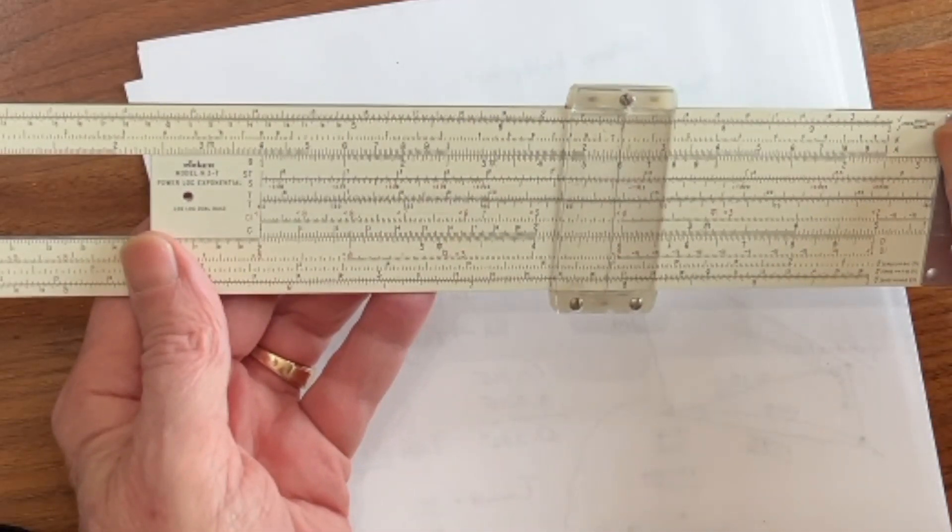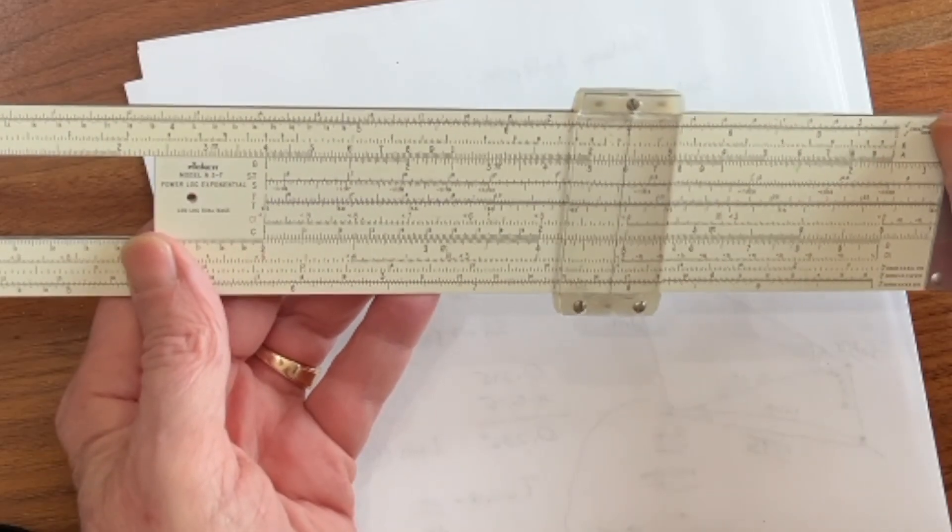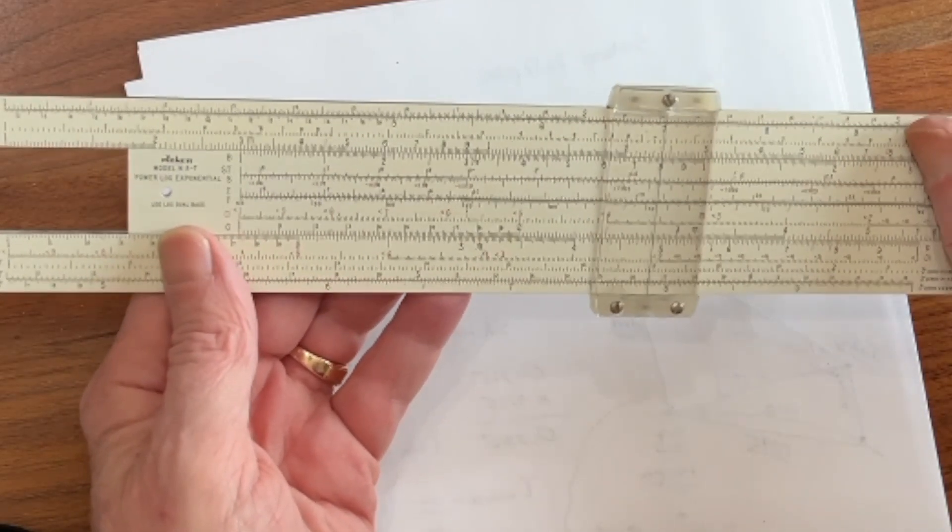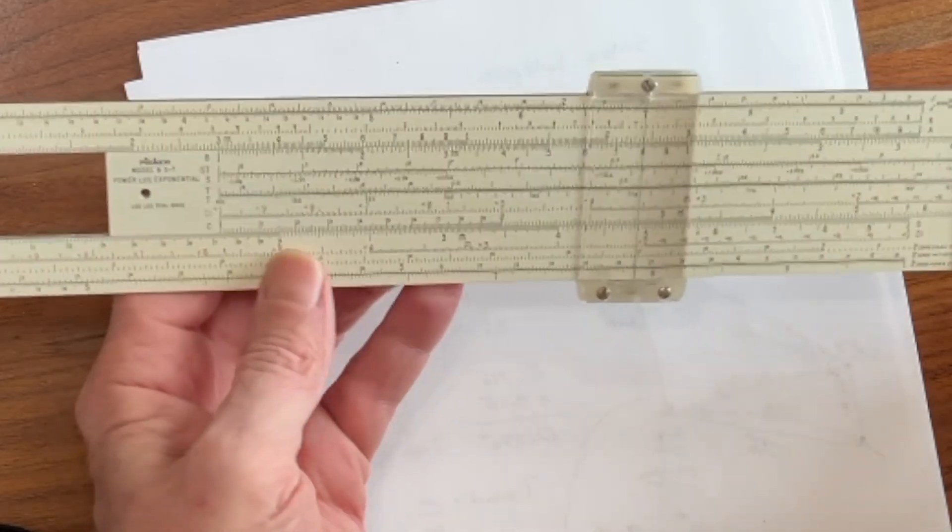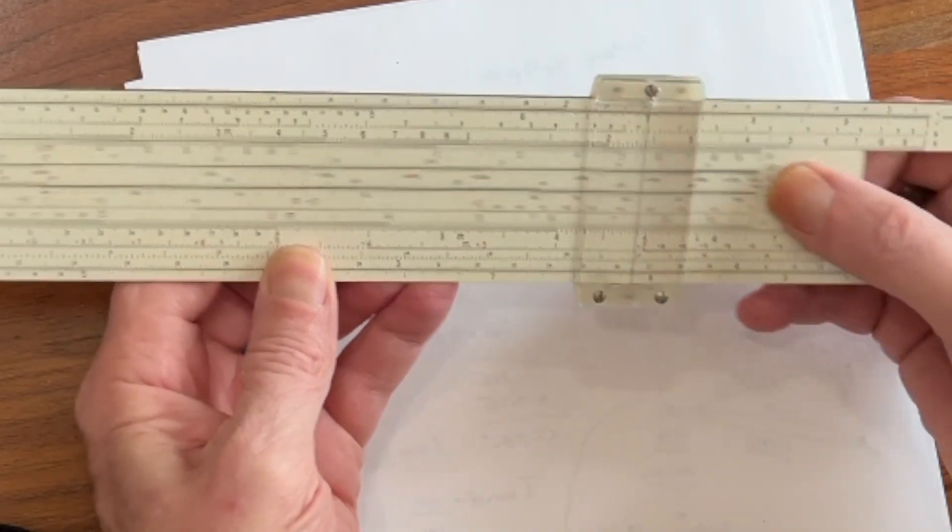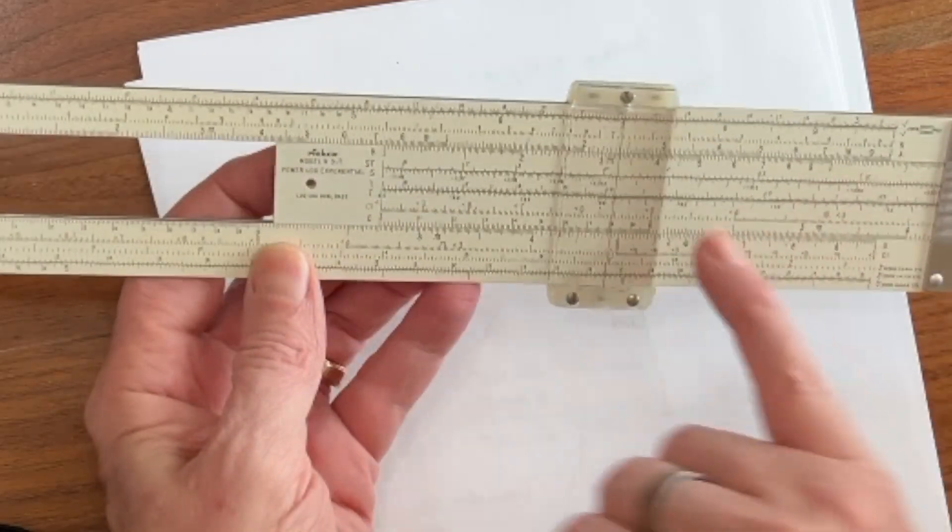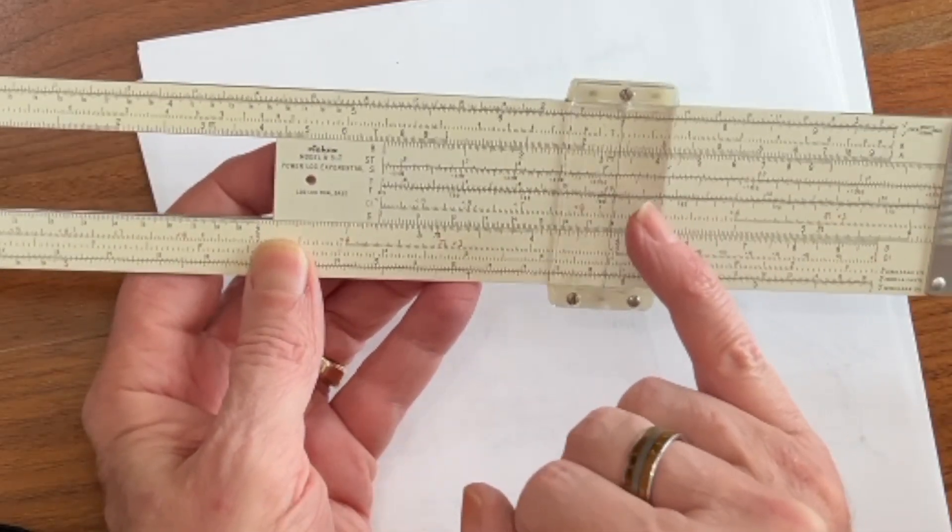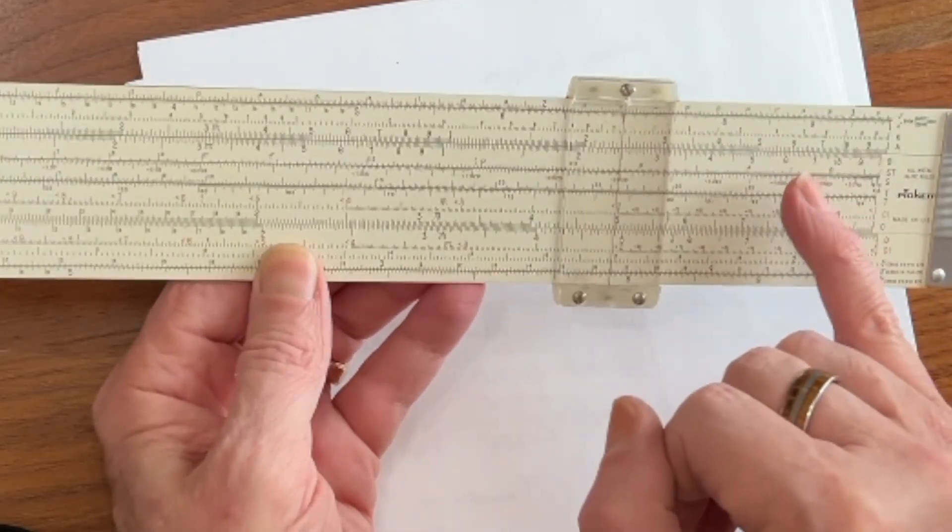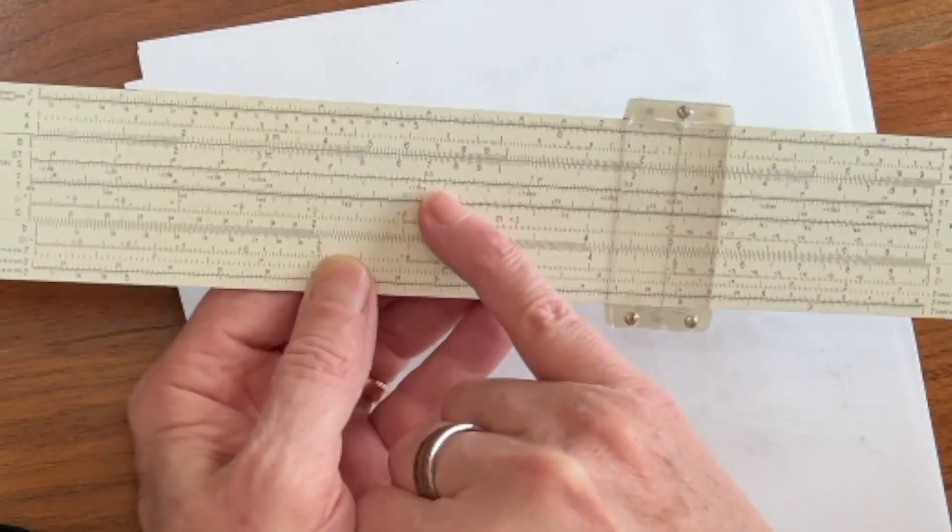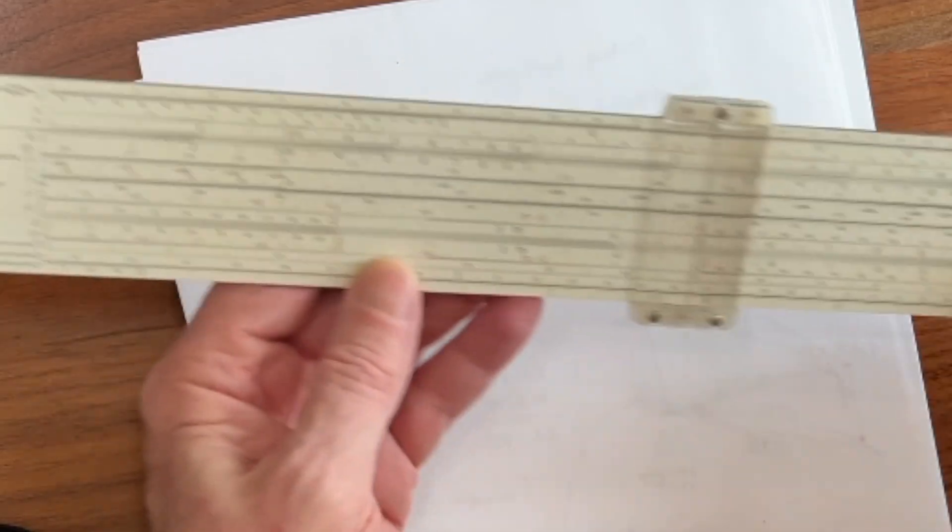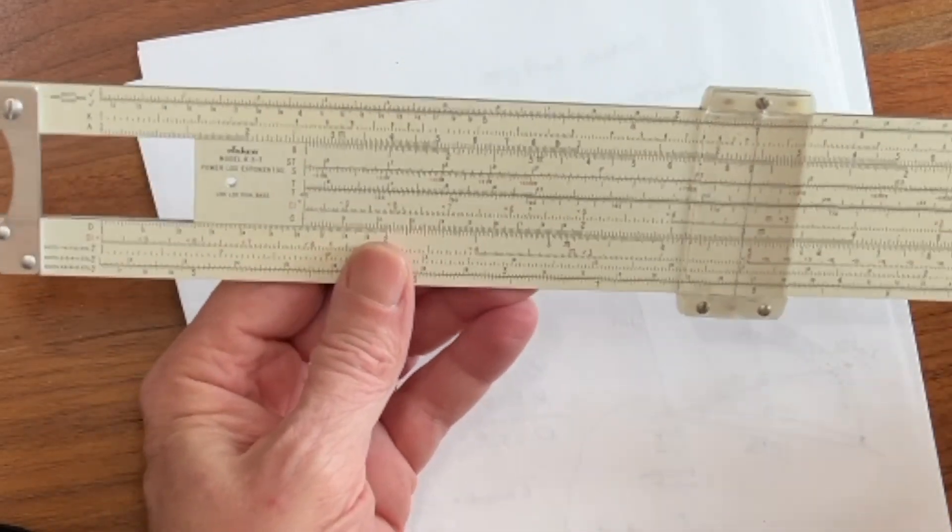Now, we can do division exactly the same way. What we do have to remember, though, is let's say we want to divide by 8. We have to remember which 8 we're dealing with. Are we dealing with that 8, or are we dealing with the 8 out here? Single-digit numbers will be on the left side of the A-B scale. Double-digit numbers will be on the right side. So that is 8. That is 80.